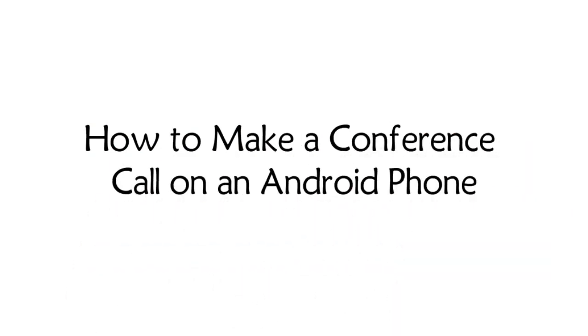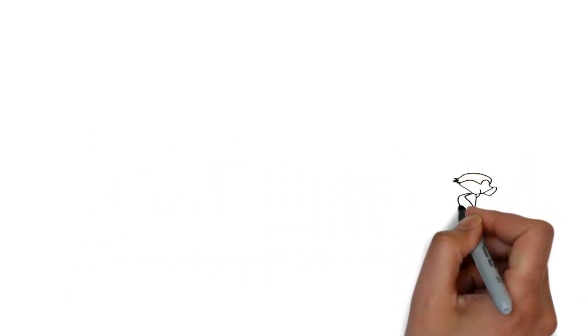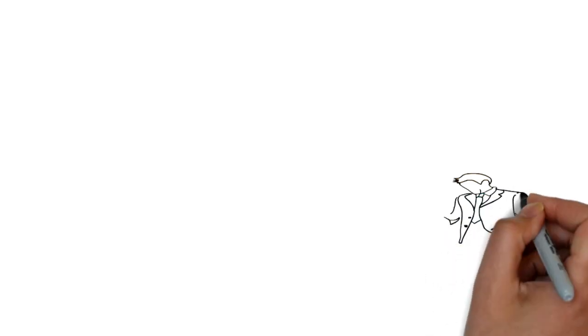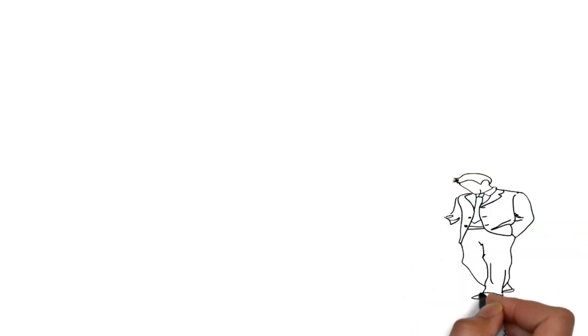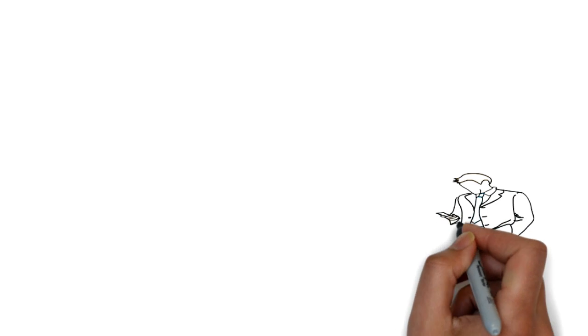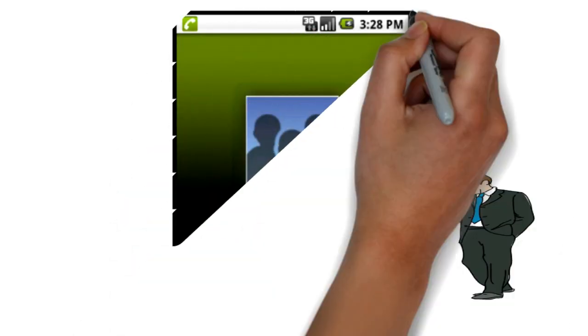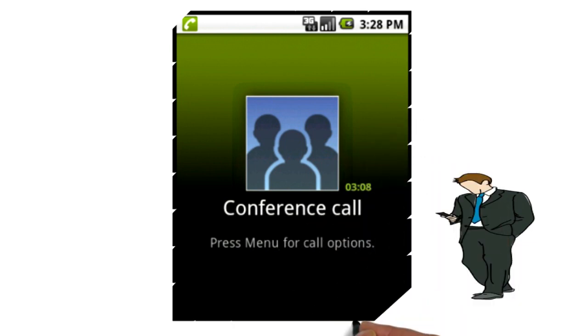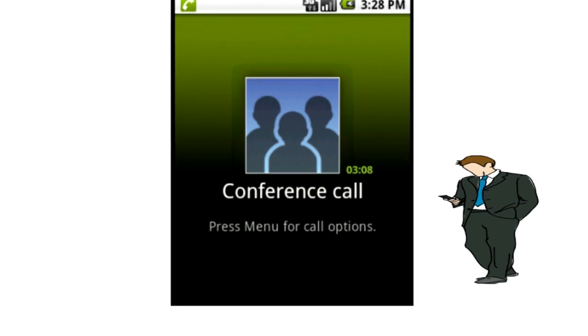How to make a conference call on an Android phone. Unlike someone interrupting a conversation by making an incoming call, a conference call is one you set out to make intentionally. You make one call and then add a second call. Touch an icon on the phone's touchscreen and then everyone is talking. Here's how it works.